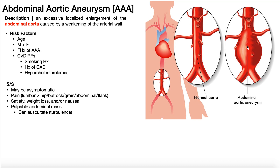The triple A doesn't necessarily develop over the course of a day — there's no single acute moment where it develops, because we're looking at weakening of arterial walls. It can take weeks to develop. That gives time for the patient to experience early satiety and lack of hunger, which can then result in visible or observable weight loss.